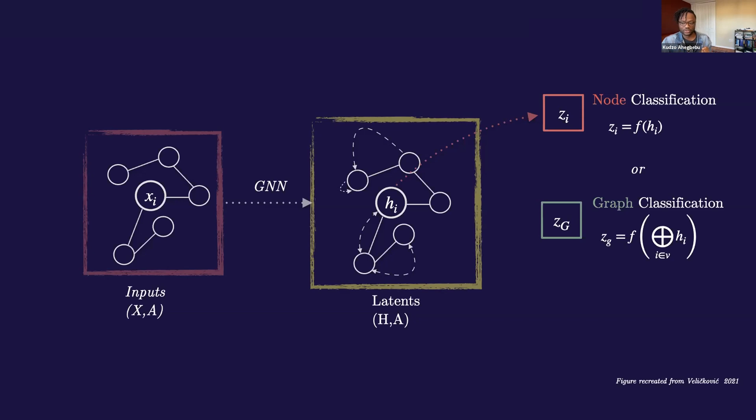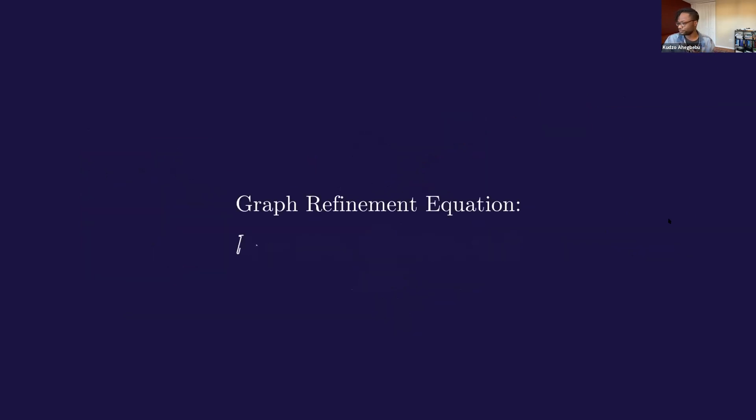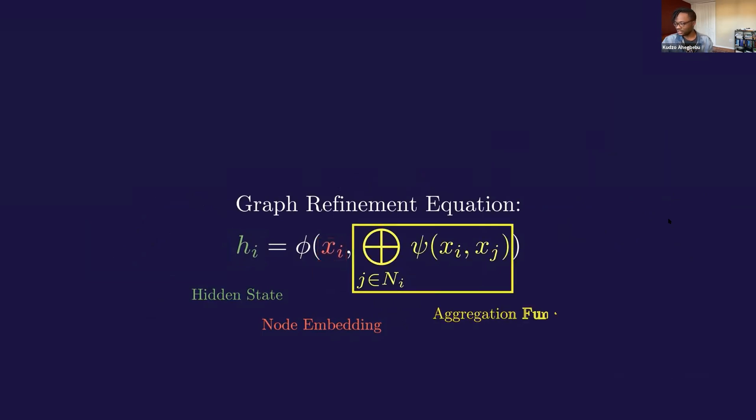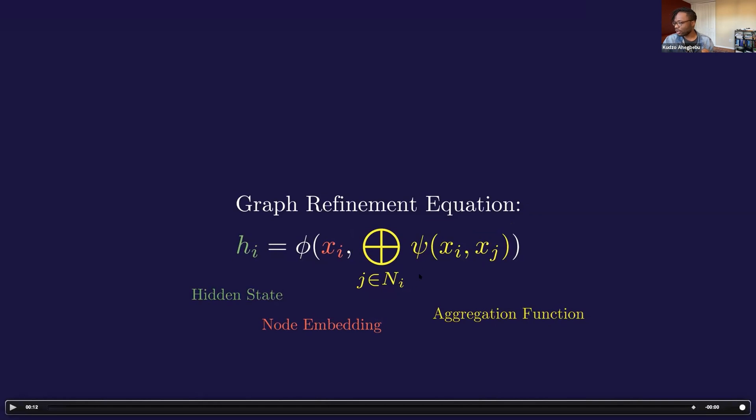The GNN processes this graph by iteratively performing a learned message passing operation between the nodes, where it attempts to refine its internal representation of those nodes. At the end of this refinement phase, we can then run a classification task on either the individual nodes, or if we aggregate the nodes, we can run classification on the entire graph. A key feature of these GNNs is this graph refinement equation, which I'll come back to at least twice in this presentation. It looks wild in its general form, but all it really is is just three parts. It says that the hidden state for node i is updated by a function that takes in the node embedding for that node, and all pairs of that node's neighbors passed through some function and then aggregated using your favorite aggregation function.